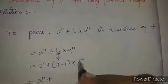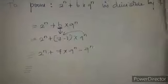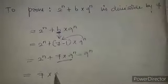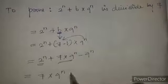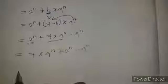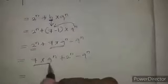Expanding the bracket, we multiply the constant term: 7·9^n minus 1·9^n. So the expression becomes 2^n plus 7·9^n minus 9^n. Now we take the positive term 7·9^n first.